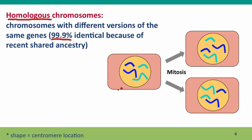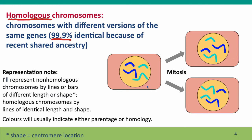Here's a cell undergoing mitosis, and I've drawn the chromosomes using a representation I'll continue to use throughout this module. Chromosomes I want you to see as homologous are drawn as the same size and shape. I've also used color coding to indicate parentage: dark blue for chromosomes that came from one parent — say dad — and light blue for chromosomes that came from the other parent, mom.